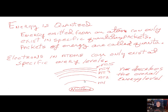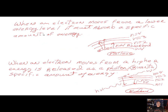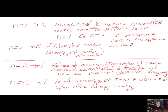Notice that the difference in energy between n=1 and n=2 is larger than the difference between n=2 and n=3. When an electron moves from a lower energy level, it must absorb a specific amount of energy — we call that absorption. When an electron moves from a higher energy level to a lower energy level, energy is released in the form of a photon, a quanta of energy. Electrons cannot exist between those quantized energy levels; they can only exist at those allowed energy levels.